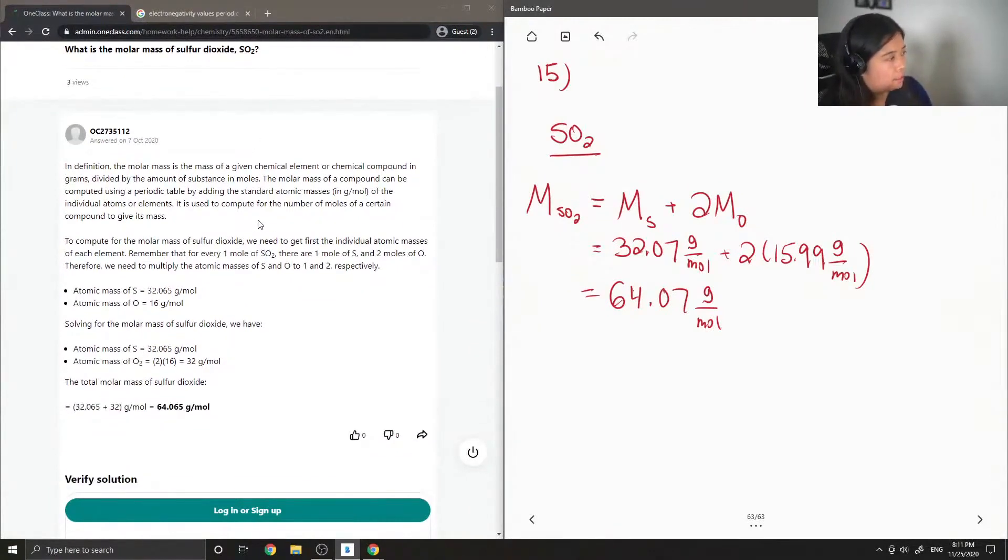Junior tutor said in definition, the molar mass is the mass of a given chemical element or chemical compound in grams divided by the amount of substance in moles. Molar mass of a compound can be computed using a periodic table by adding the standard atomic masses of the individual atoms or elements.